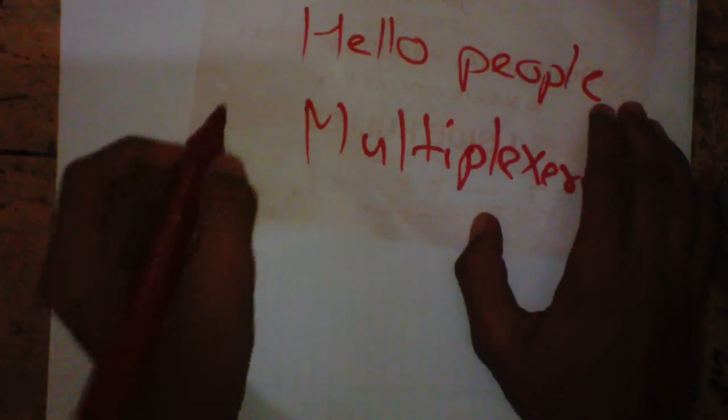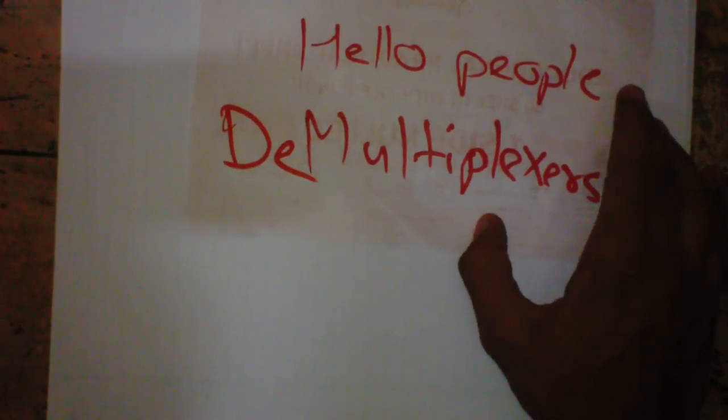Easily. Now we will see demultiplexer. So as we know, multiplexer is many to one, demultiplexer is one to many.